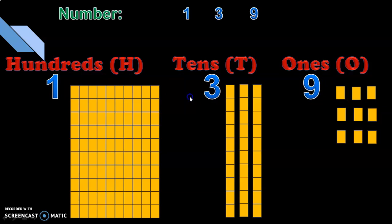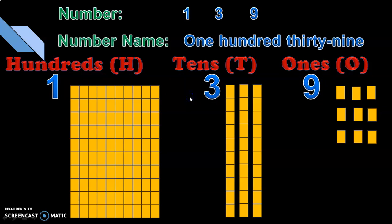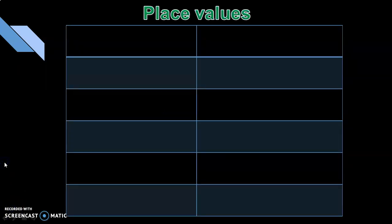And how do you write the number name? It is one hundred thirty-nine, with a hyphen in between. Let us move on to questions related to place values. There are different ways in which you can give questions on the place value concept. Let us see some interesting examples here.